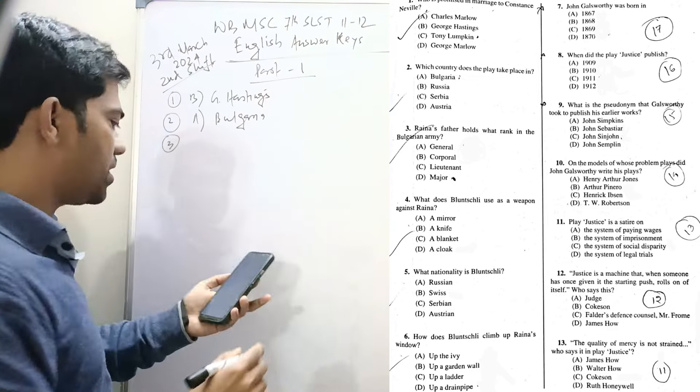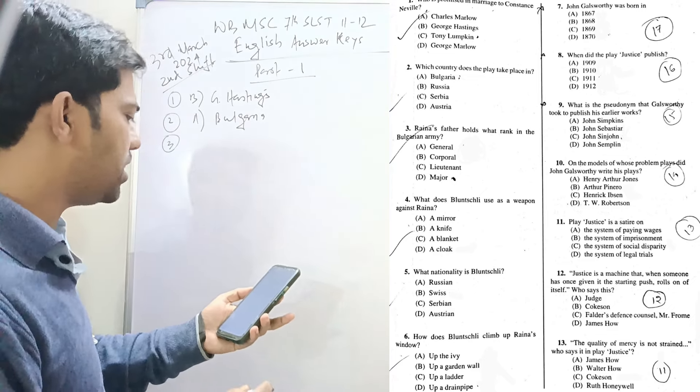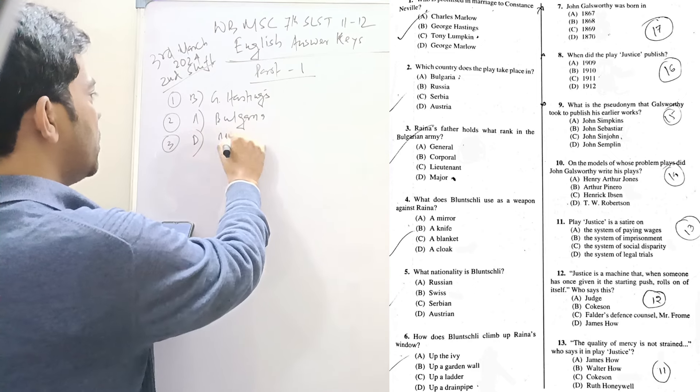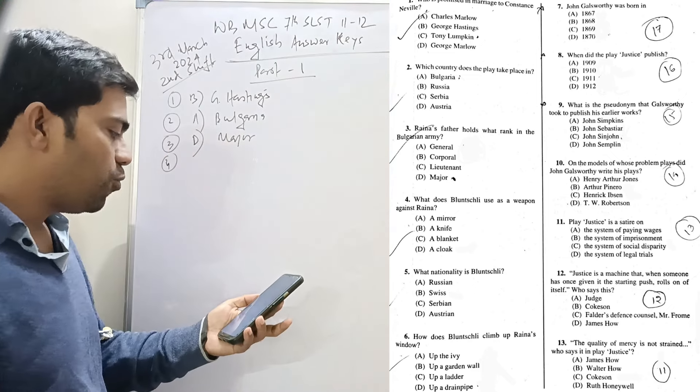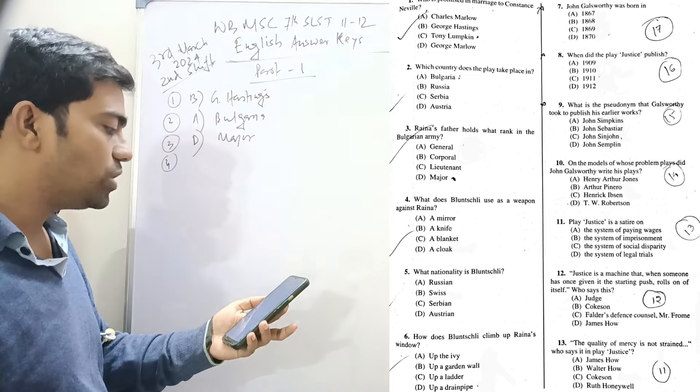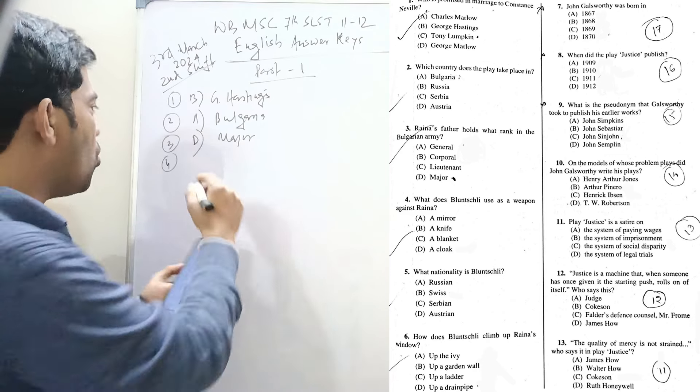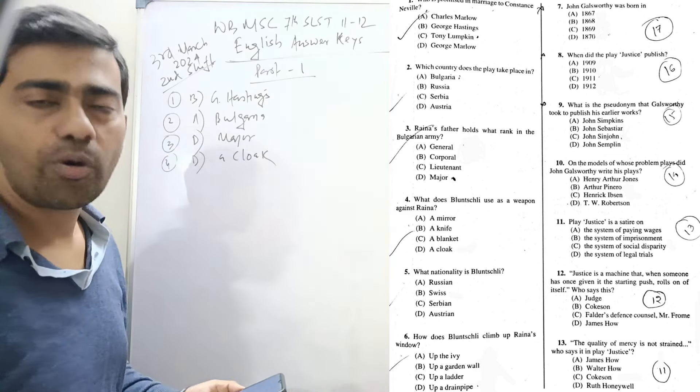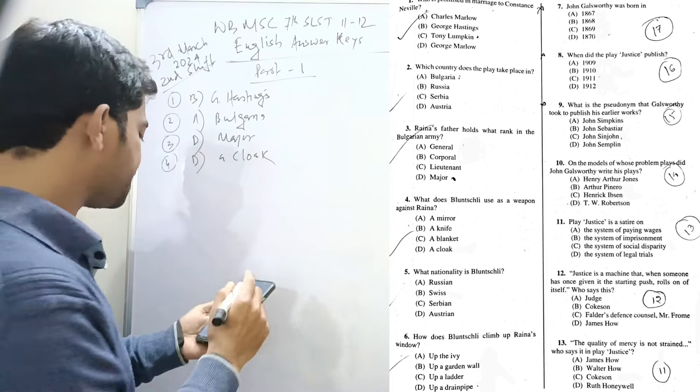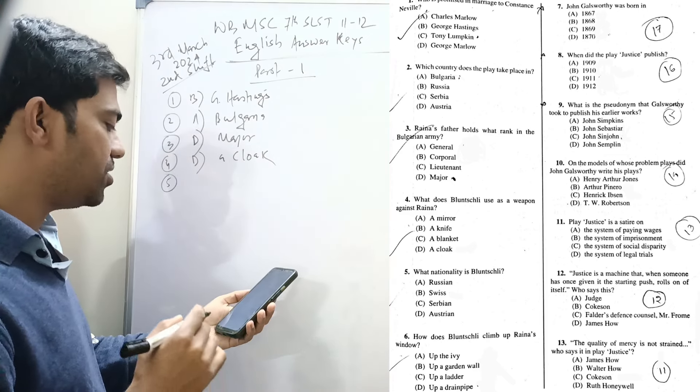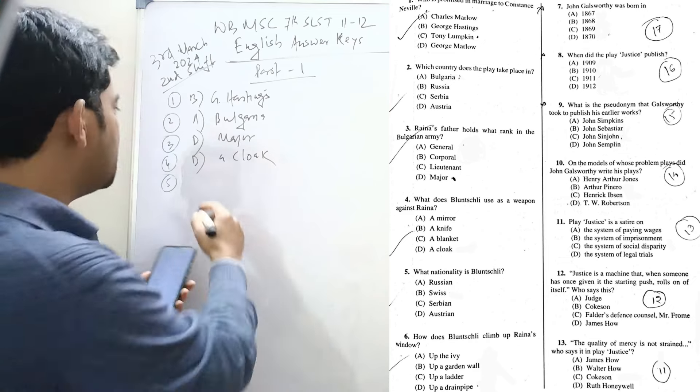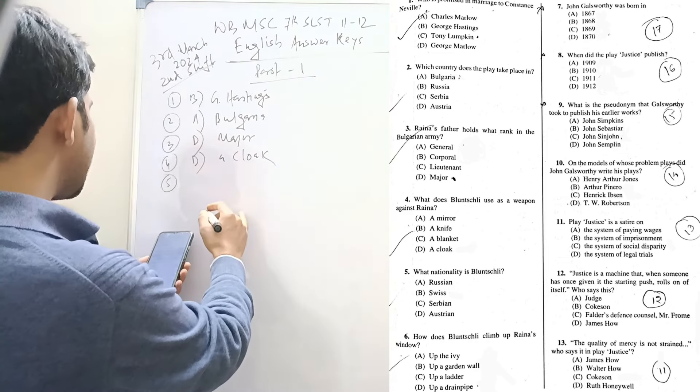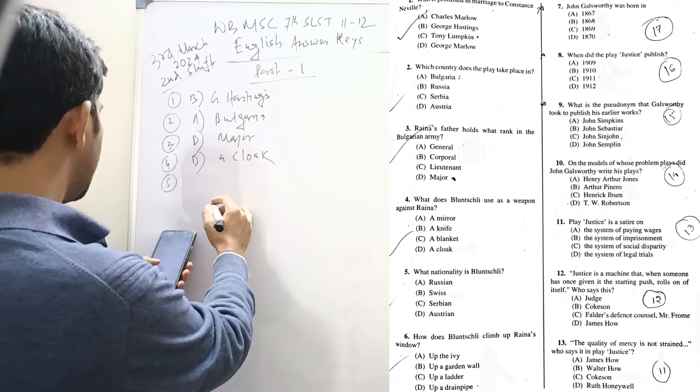Question three: Raina's father holds what rank in the Bulgarian army? Major, Major Petkoff. Question four: what does Bluntschli use as a weapon against Raina? A cloak against Raina. Question five: what nationality is Bluntschli? The question setting grammatical concord is wrong. What nationality is Bluntschli? It's Swiss.